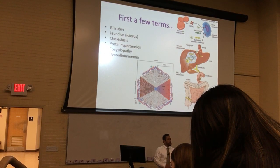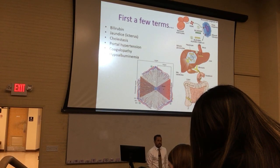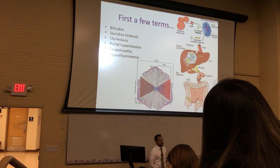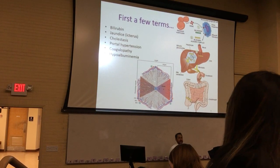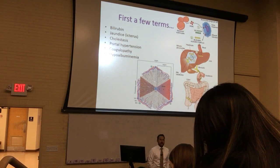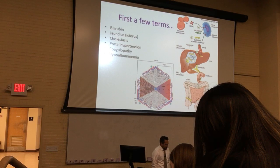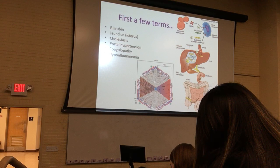Coagulopathy: the liver synthesizes all of the coagulation factors except one — factor eight. So it makes 12 out of the 13 factors; the one it doesn't make is factor eight. When the liver is compromised, blood clotting is compromised.